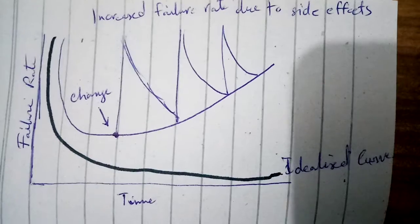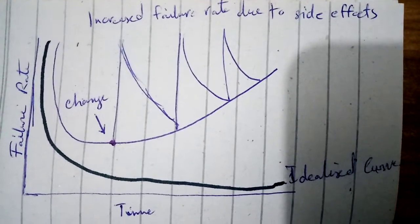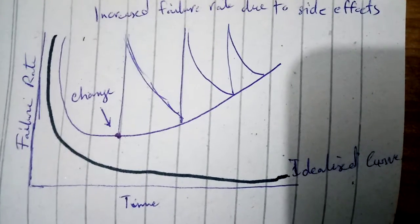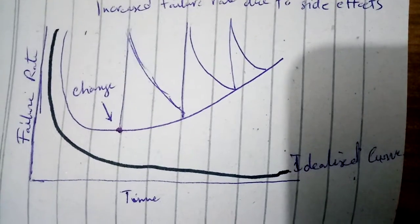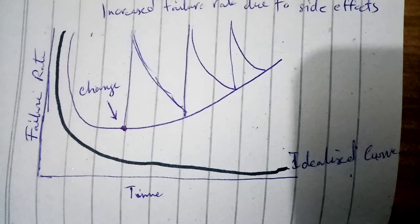This is basically a software failure curve. We get to know how software responds due to time and the failure rate. On the x-axis we have time and on the y-axis we have the failure rate.